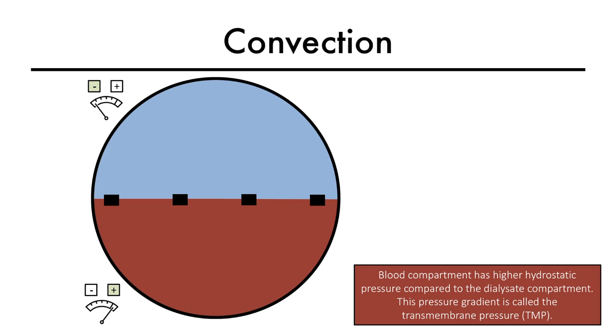This allows water to move from the blood to the dialysate. This hydrostatic pressure gradient is called transmembrane pressure, and the process of removal of water from blood is called ultrafiltration.